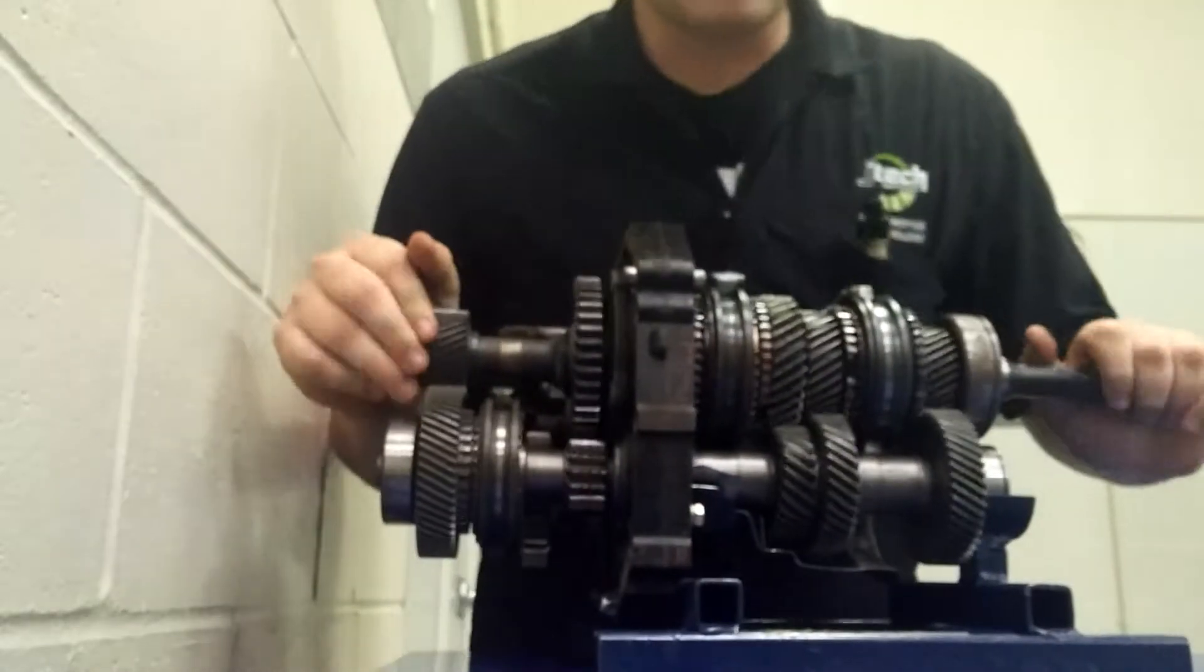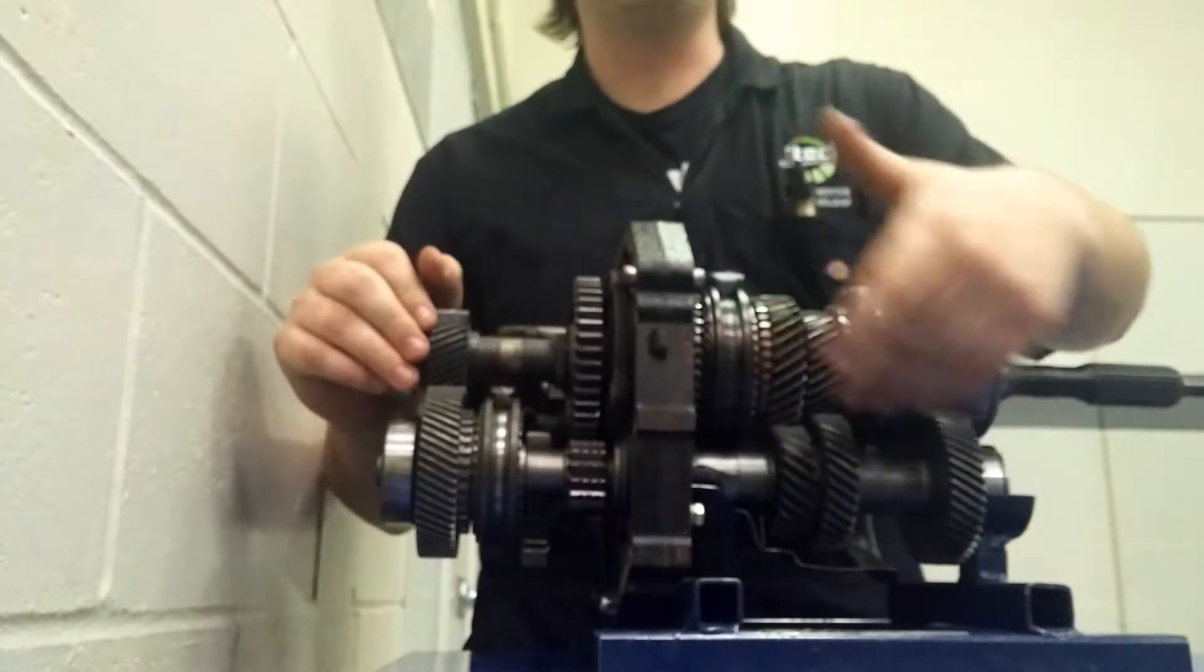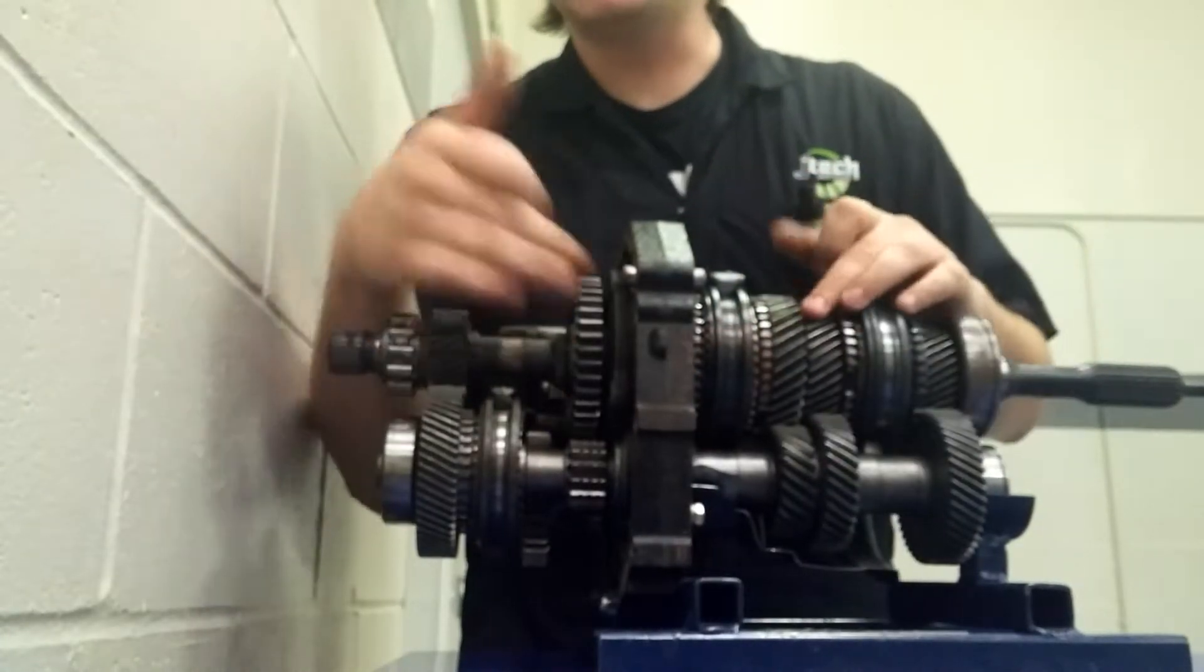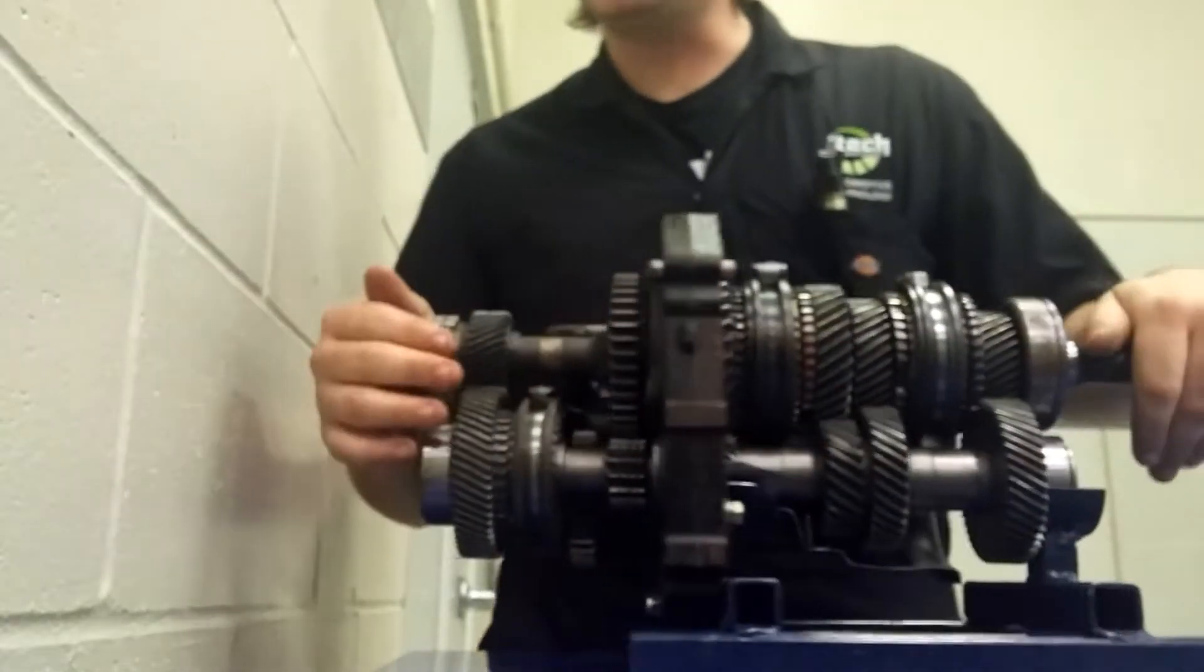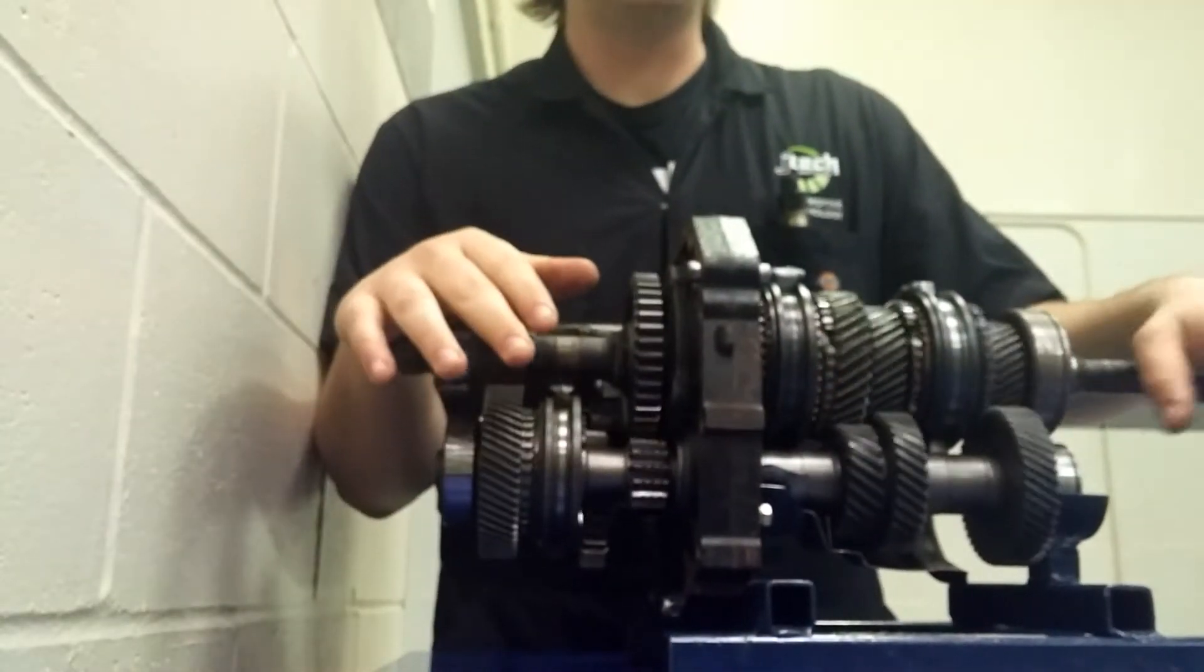That's pretty much it. It's pretty basic. Power comes in the input, goes down to the counter shaft, distributes out to whichever gear you're going into, reverses direction if you're in reverse, and it comes out the output shaft, goes to your wheels, and gets you down the road.